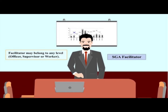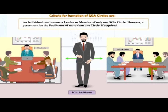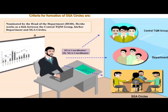Only a non-officer can become a leader or member. An individual can become a leader or member of only one SGA circle. However, a person can be the facilitator of more than one circle if required. Each SGA circle should be registered on the quality management system. The SGA coordinator or alternate SGA coordinator is nominated by the head of the department, and works as a link between the central DQM group, the department, and SGA circles.